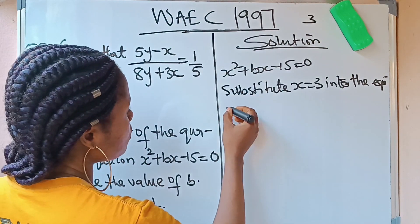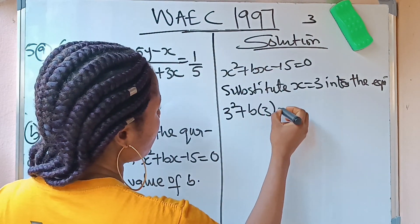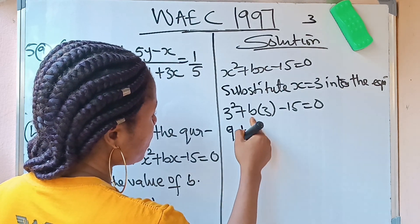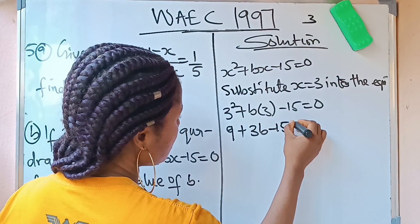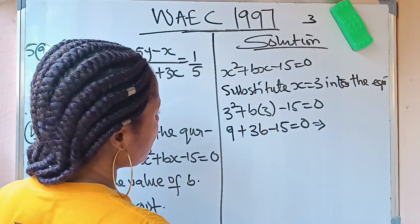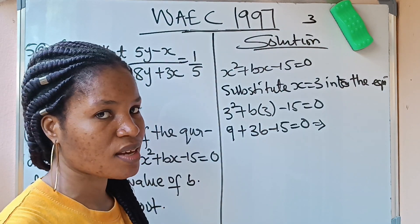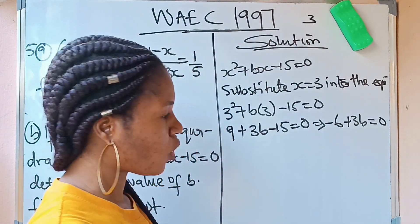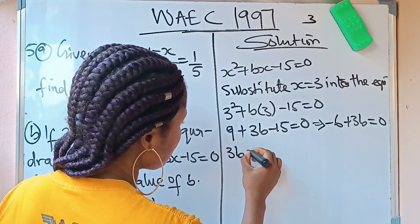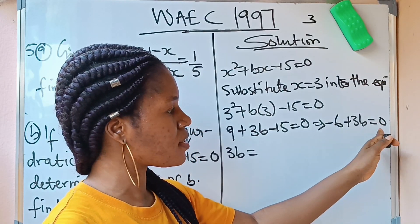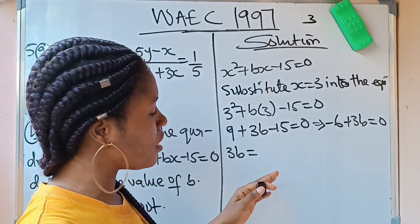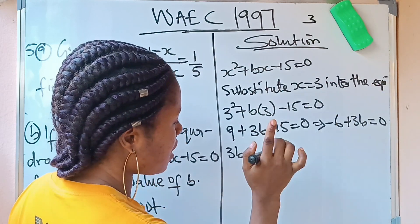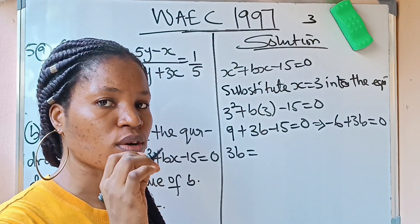Substituting x equals 3, we get 3 squared plus b times 3 minus 15 equals 0. So 3 squared gives us 9, plus 3b, minus 15 equals 0. Collecting like terms: 9 minus 15 gives us negative 6, so we have negative 6 plus 3b equals 0.